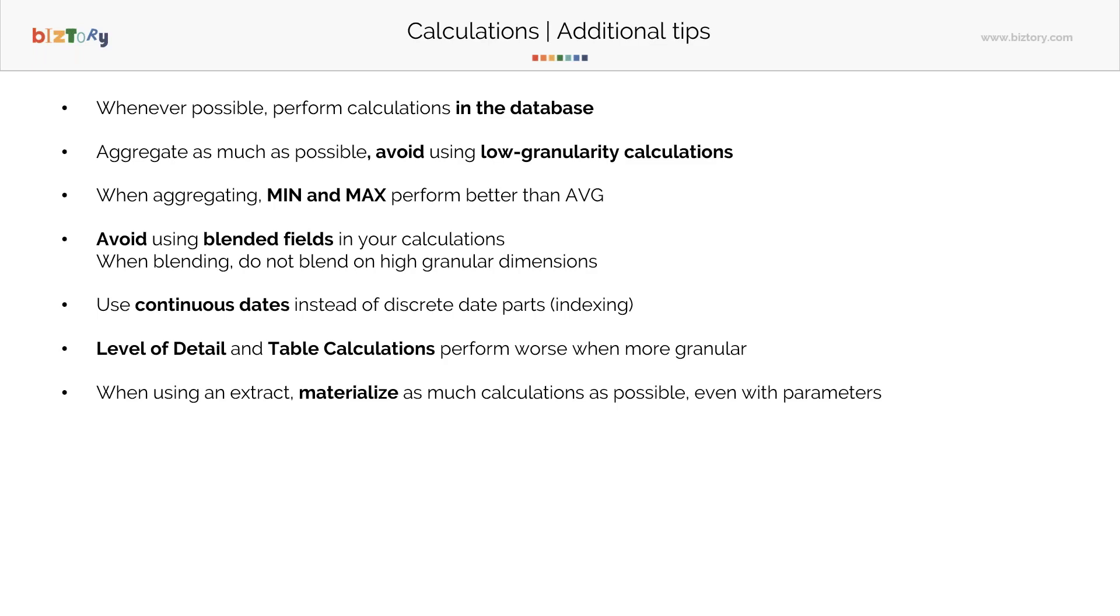And lastly, when blending, don't try to blend on very high granular dimensions because blending already takes up and can impact performance. It will impact performance especially when you're blending on high granular dimensions, so take note of that as well. If you have transactions and you have other related data, don't go blending on the transaction ID.